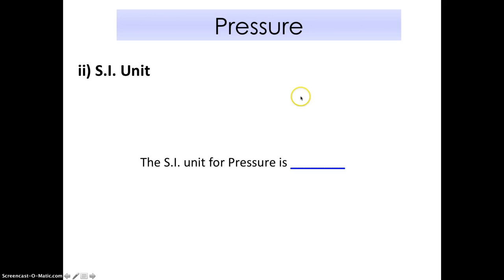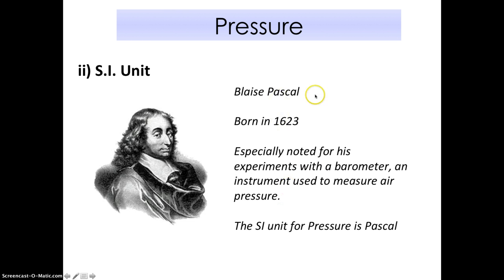Like force, the unit for force is Newton. The SI unit for pressure is a new word we call Pascal, or in short we write Pa, not just P, you must write Pa, capital P small letter a. Pascal comes from a famous scientist known as Blaise Pascal, born in 1623. One of his great discoveries is the barometer, an instrument used to measure air pressure. Because of that, scientists have decided to use his name as the SI unit for pressure.